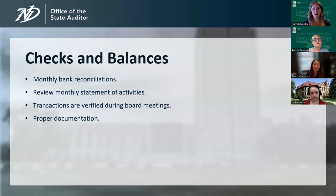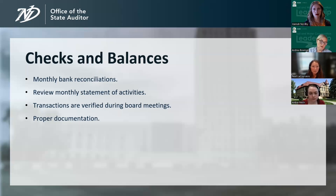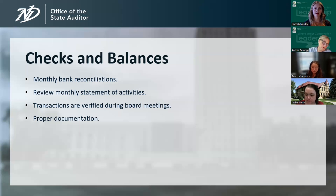When reviewing the monthly statement of activities, your total receipts — your revenues — should equal the total bank statement credits. Your total disbursements — the expenses — should equal the total bank statement debits. Your month-ending total book balance, your fund balance, should equal the total bank statement balance. All transactions should be verified during board meetings, including payments going out and expected deposits coming in. Keep sequential check numbers — if your check numbers jump around without sequence, that's a red flag. Sequential numbering helps you track that things are going out when they should.